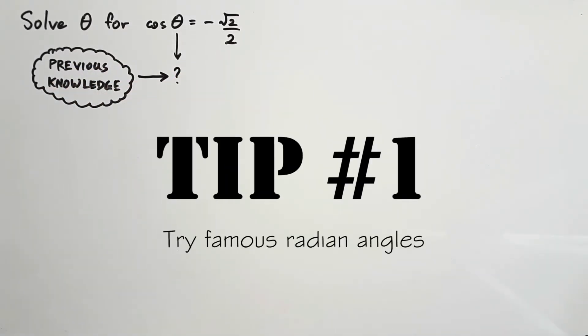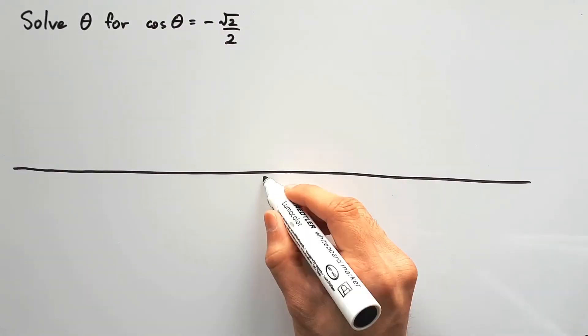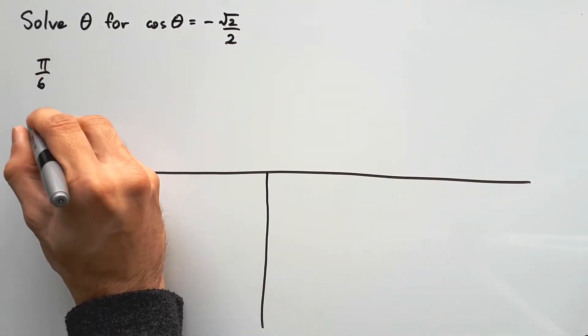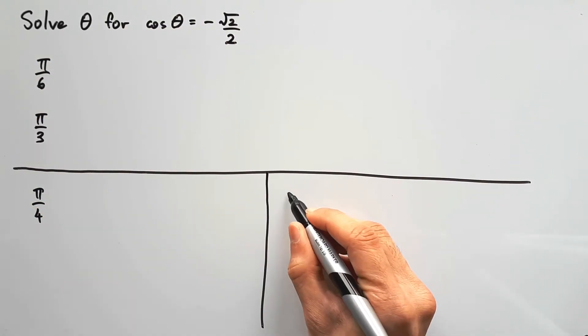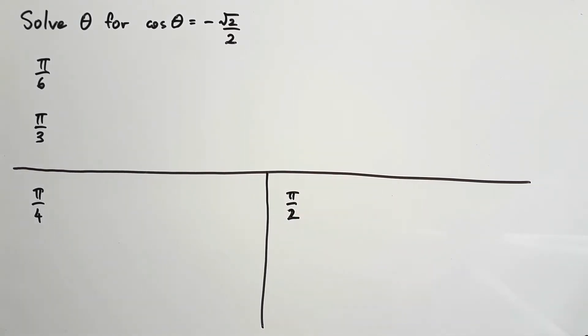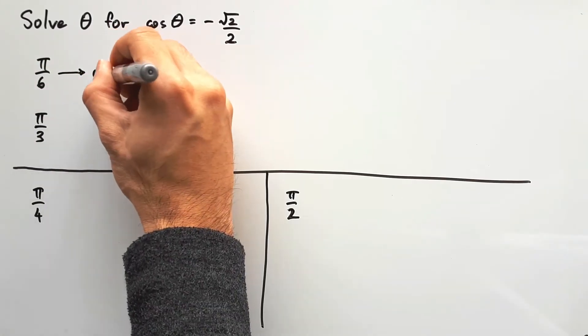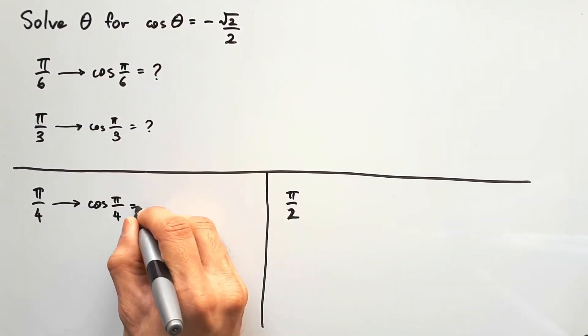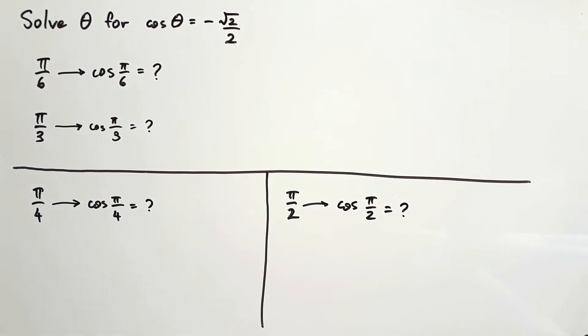Tip number 1: If you're asked to do this by hand, chances are the answer will have something to do with one of these famous radian angles: π/6, π/3, π/4, and π/2. The question is using cosine, so why don't we go ahead and find the cosine of these famous angles and see what we get. Feel free to pause the video right now if you wish to work it out before I do.